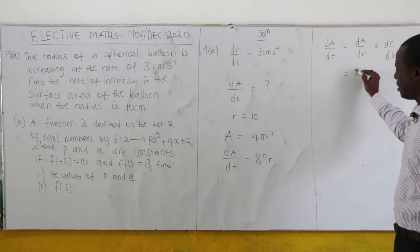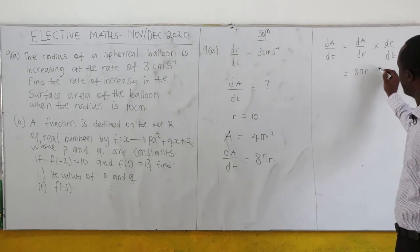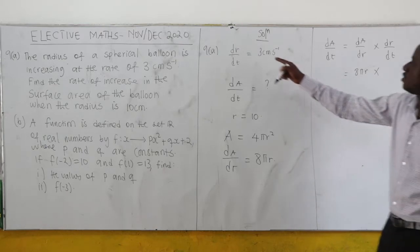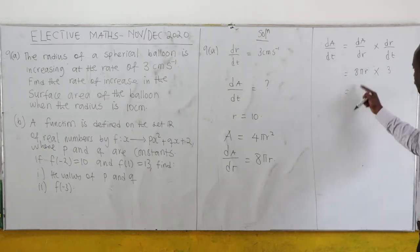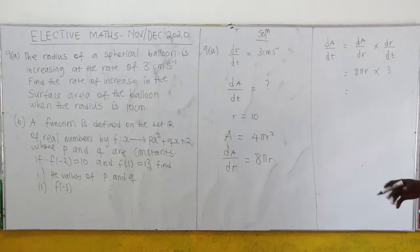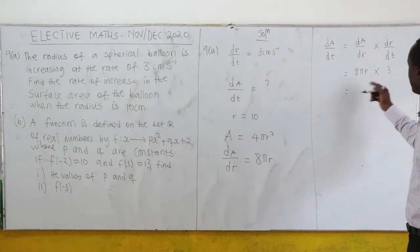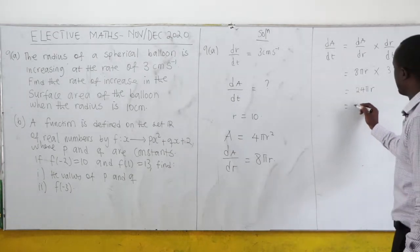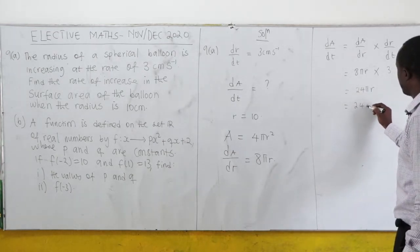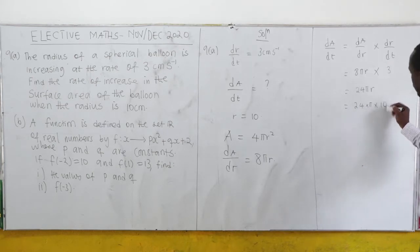dA/dr is 8πr, and dr/dt is 3. With π as 22/7, we get 24πr.